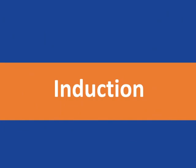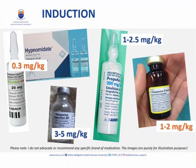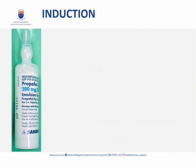Induction of general anesthesia is when we make the patient sleep, or when we induce hypnosis. In terms of induction agents we have a few different choices, including propofol, etomidate, thiopentone, and ketamine. Which one to use depends on what you have available, the anaesthetist's experience, and the patient's characteristics. Propofol is the most commonly used induction agent — it is called the milk of amnesia because of its white milky colour and because it induces amnesia.